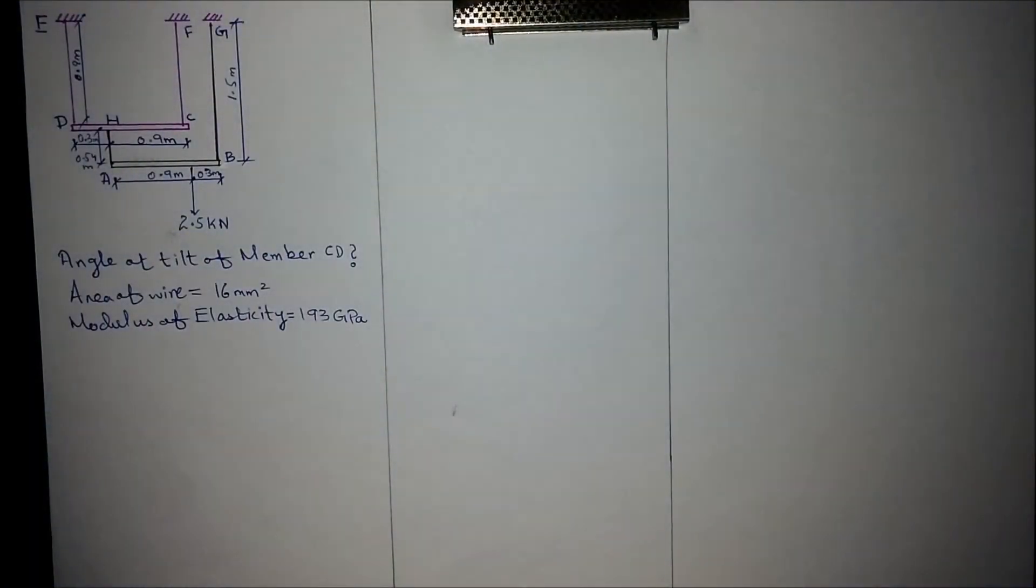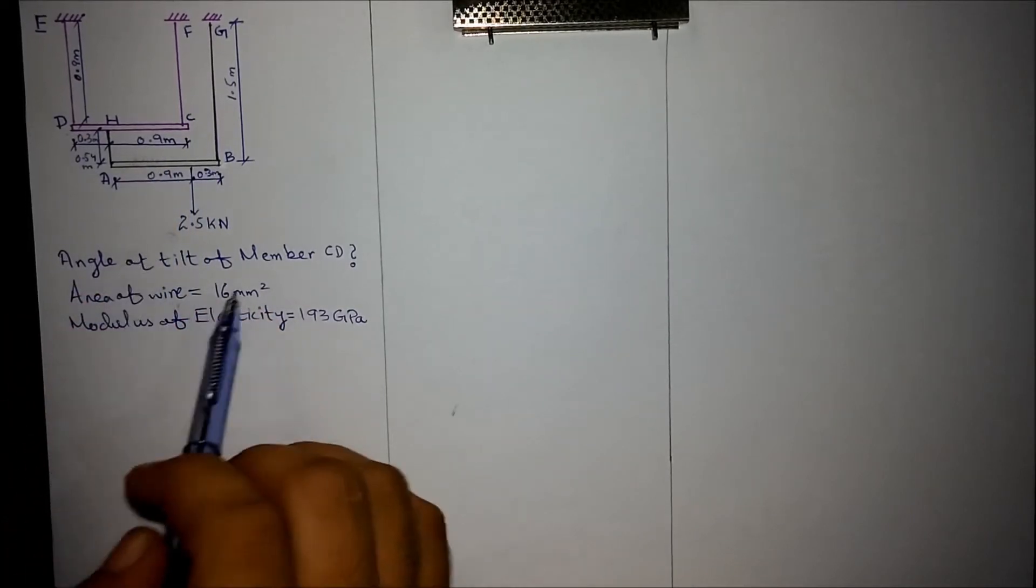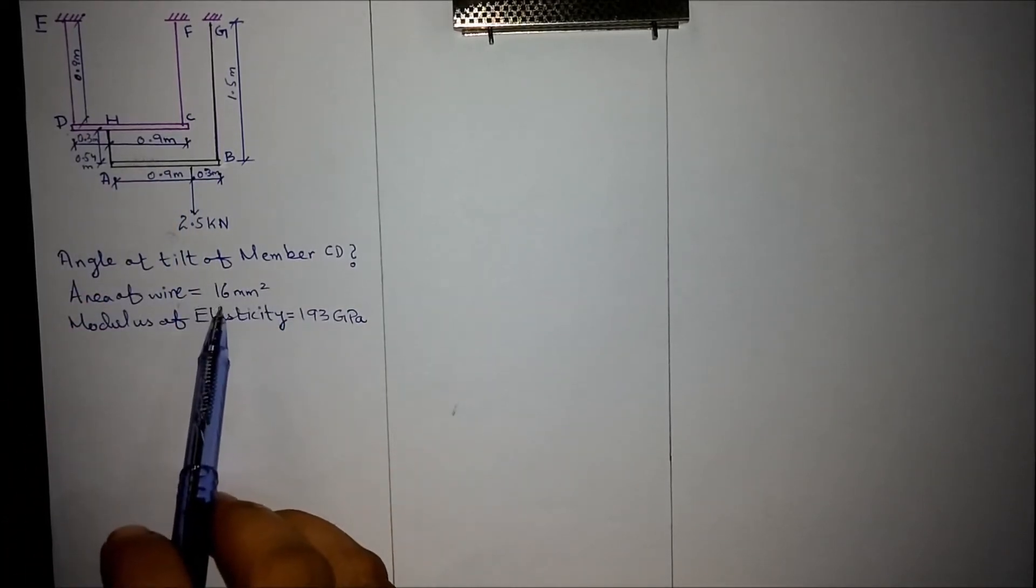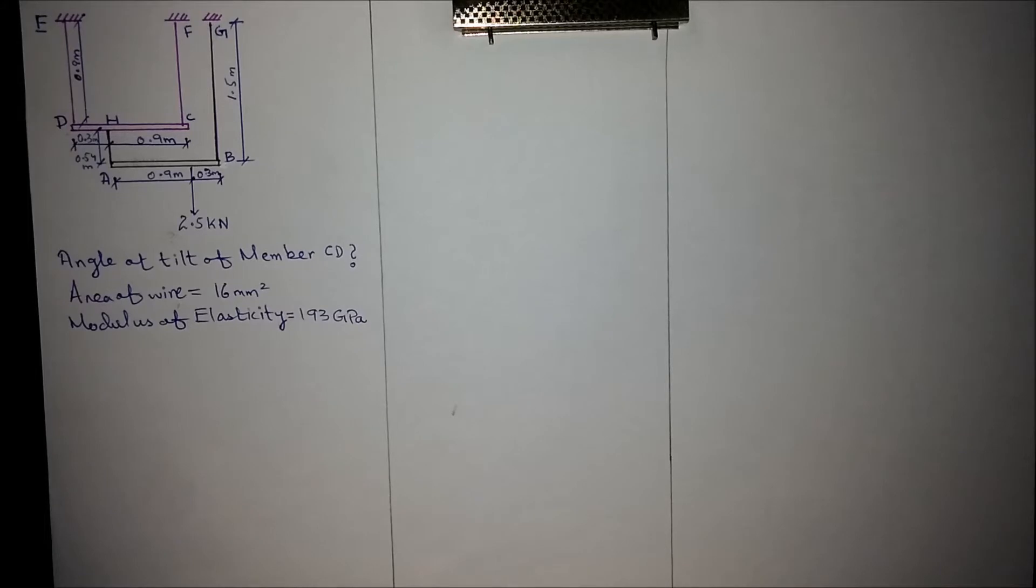In the given problem, we are required to find out the angle of tilt in member DC. We are given the area of wire as 16 mm² and modulus of elasticity of the wire as 193 GPa.